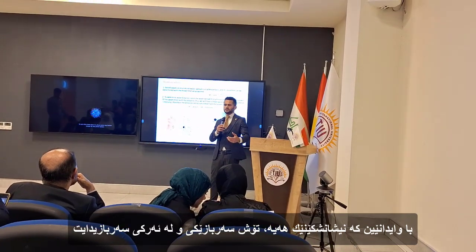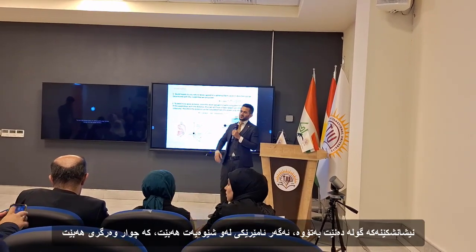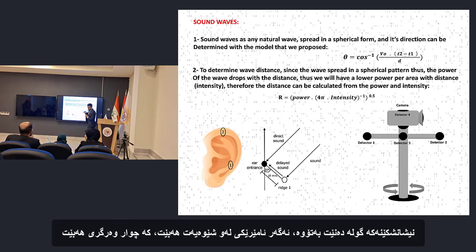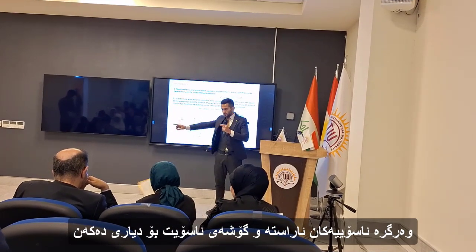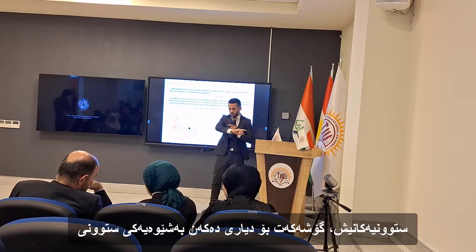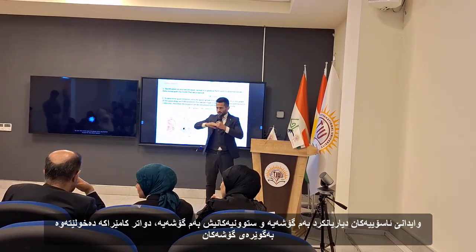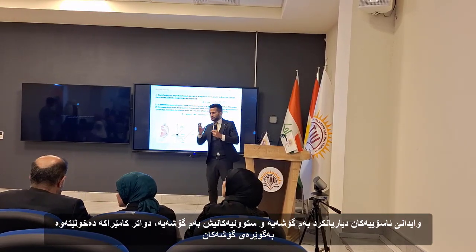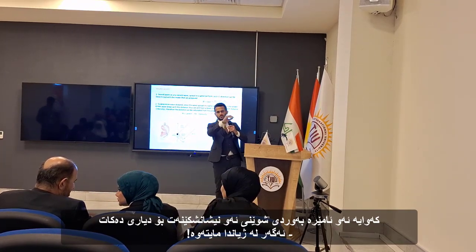Let's say there is a sniper — you are a soldier in the military and a sniper shoots bullets at you. If you have a device like this with four detectors, the horizontal detectors will determine the horizontal angle and the vertical detectors will determine the vertical direction. Then the camera will rotate based on the angle, and this device will tell you precisely the location of the sniper.